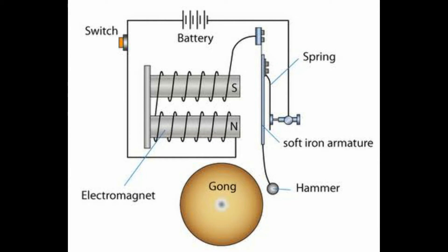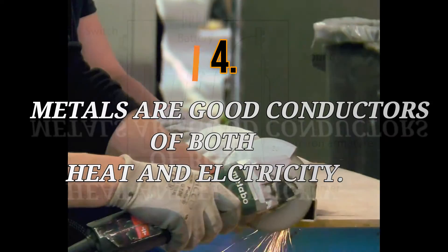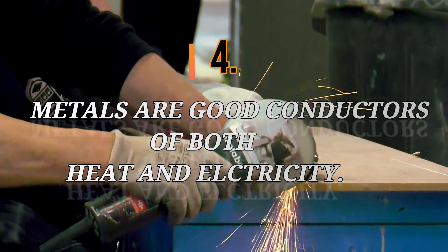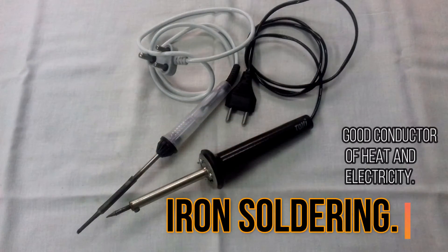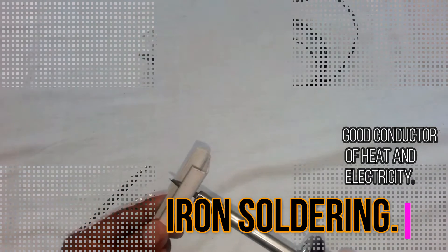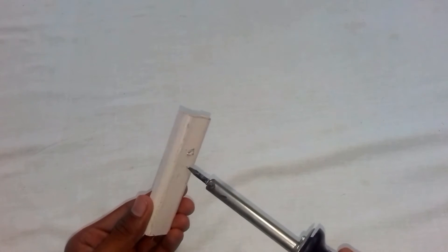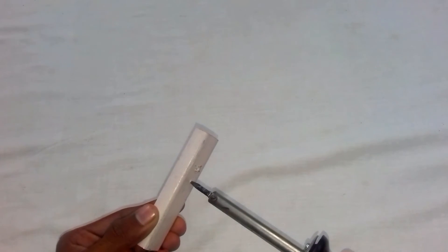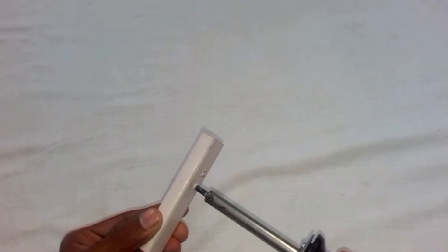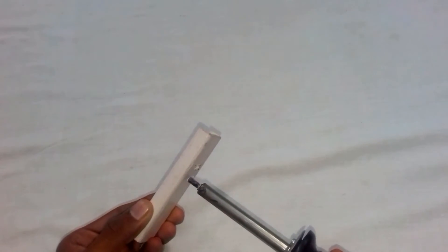Metals are good conductors of heat and electricity both. When any metal is heated, it becomes hotter very quickly. Let us take an example of iron soldering. Soldering is an instrument which is used to make holes on plastic objects and to solder. Iron soldering is made up of metal because metal can get hotter very fast, and another reason is their melting point is very high.